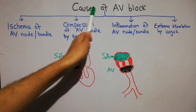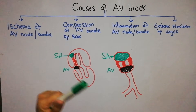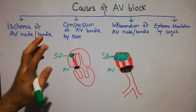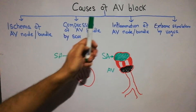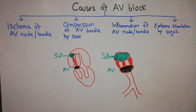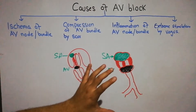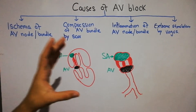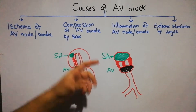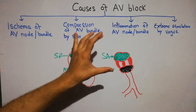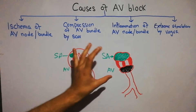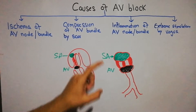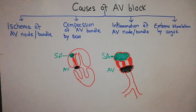Today we are going to discuss the causes of atrioventricular blocks or AV block. We previously discussed the causes of cardiac arrhythmias, and one of the major causes was AV block. By AV block we simply mean any interruption or block in the transmission of cardiac impulse from the atria into the ventricle. The only way for transmission of electrical impulse from the atria into the ventricles is through the AV bundle, the atrioventricular bundle.